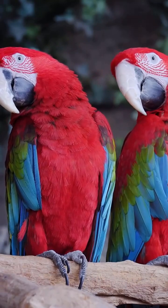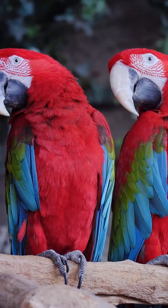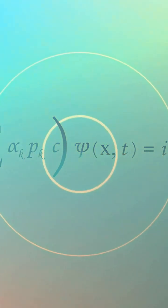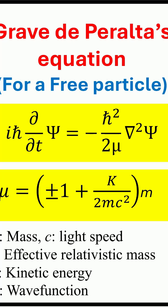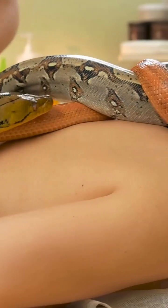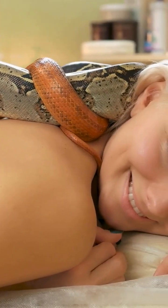Like classical particles and non-relativistic quantum particles, relativistic quantum particles can be in common states with positive kinetic energy. In addition, relativistic quantum particles could be in exotic states with negative kinetic energy. Relativistic wave equations must have common and exotic solutions. For free quantum particles, there is a pair of Schrödinger-like but relativistic Graves-De Peralta equations. One only has common solutions and coincides with the Schrödinger equation in the non-relativistic limit. The other Graves-De Peralta equation only has exotic solutions with negative kinetic energy.